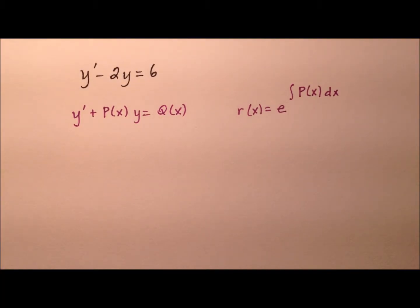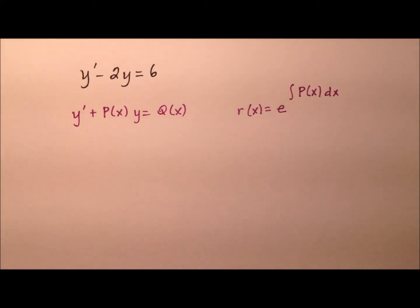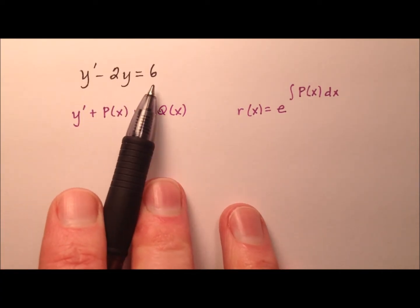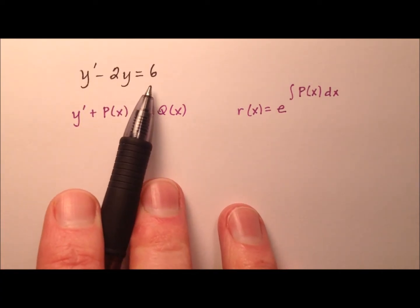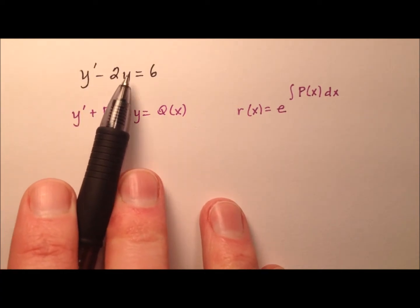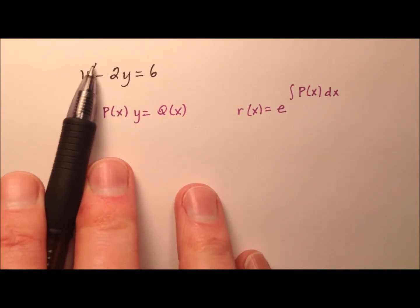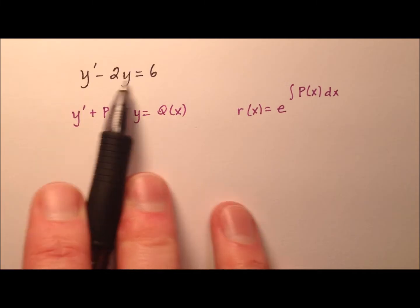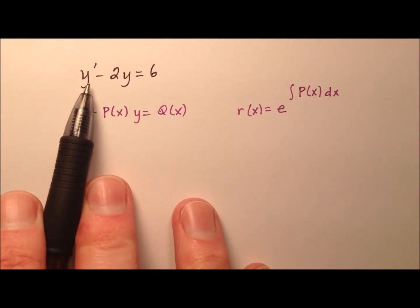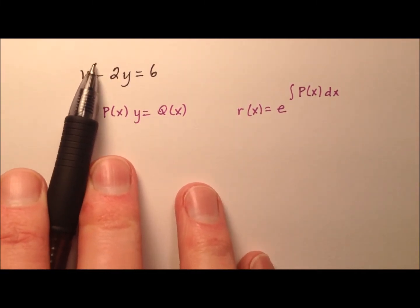In this video, I would like to introduce you to first order linear differential equations, walk through a couple of examples, and explain how they work. Our first example is y prime minus 2y equals 6. This is a differential equation because it includes y as a function and one of its derivatives. We consider this equation first order because the highest derivative we see is the first derivative.